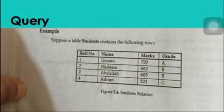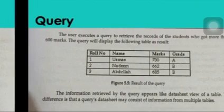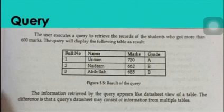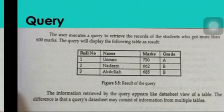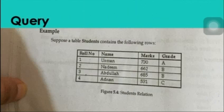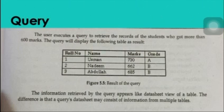We have a student table as a complete table. If we want to extract some records using criteria — for example, the user executes a query to retrieve records for students who got more than 600 marks — from a table with marks 730, 662, 685, and 531, only 531 does not meet the criteria of greater than 600, so the first three records are returned.